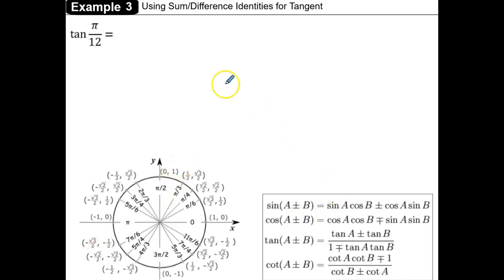In example 3, we're going to use a sum or difference identity for tangent to find the exact value of the tangent of pi over 12.